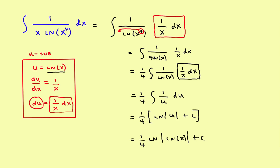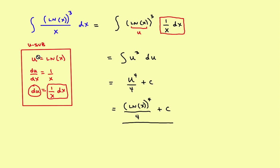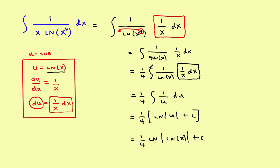The difference in these two problems really comes down to this: in both problems you let u equal the natural log of x. But in the first problem, that choice turned into a power rule problem, and you used the power rule to find the integral. In the second example, because the natural log was in the denominator, when you converted to a u problem it turned into an integral of one over u, which turns into a natural log problem. So just two samples — both require u substitution and both involve the natural log, but one uses the power rule and the other uses the integral of one over u rule.